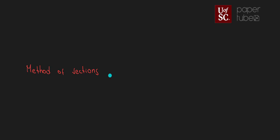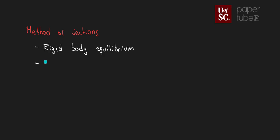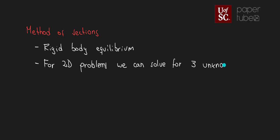In the method of sections, instead of using particle equilibrium, we're going to use rigid body equilibrium. This means that for problems in 2D, we're going to have a total of three equations of equilibrium — sum of forces in one direction, sum of forces in another direction, and sum of the moments. So for 2D problems, we can solve for three unknowns per free body diagram.